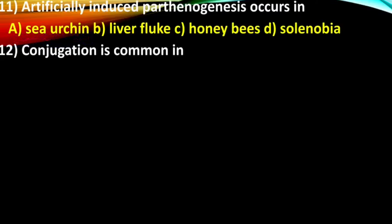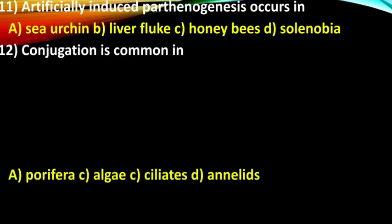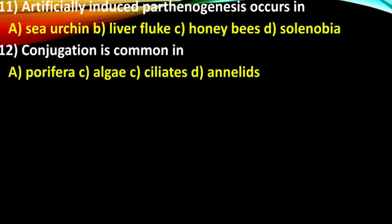Question 12: Conjugation is common in — options are peripheral algae, ciliates, annelids. The right answer is ciliates.